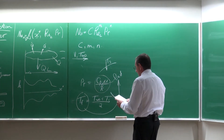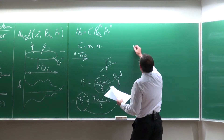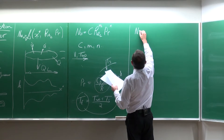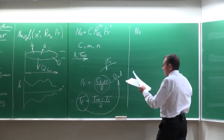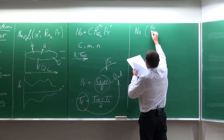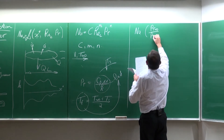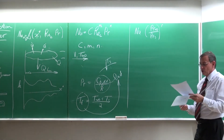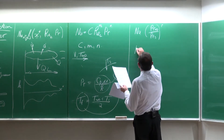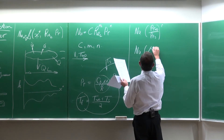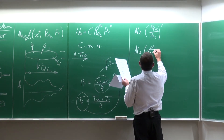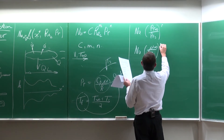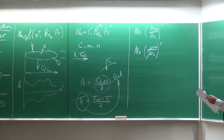That is one way of handling fluid properties. A more sophisticated approach, which we are not going to use, is to take the Nusselt number and multiply it by (Pr_∞ / Pr_wall)^R, or alternatively multiply by the viscosity ratio (μ_∞ / μ_wall)^R. These are modifications used in heat transfer to account for changes in properties.